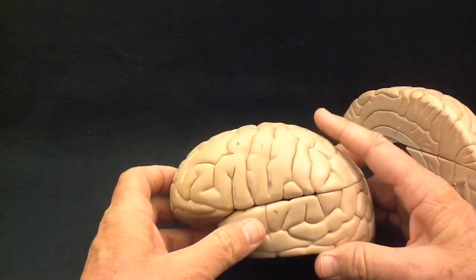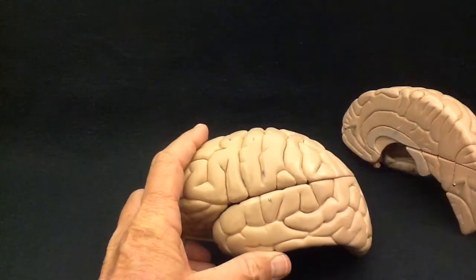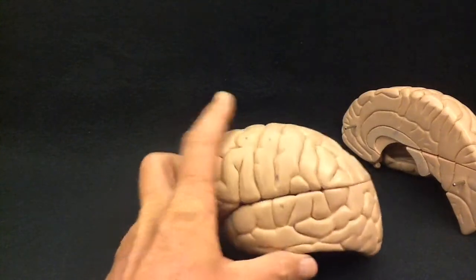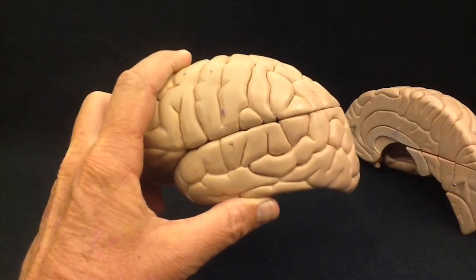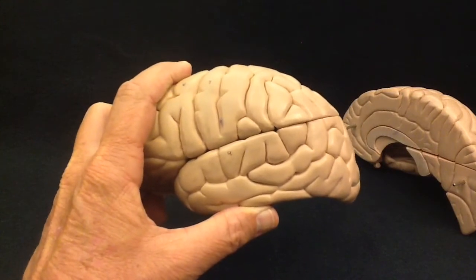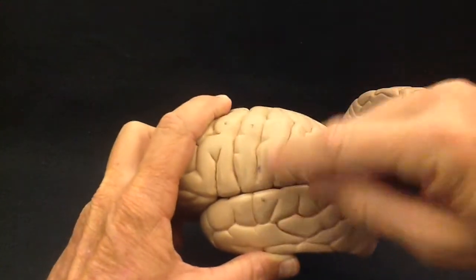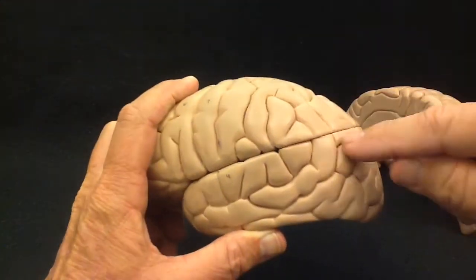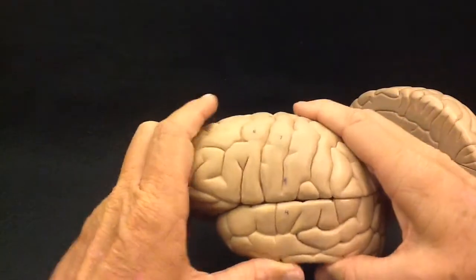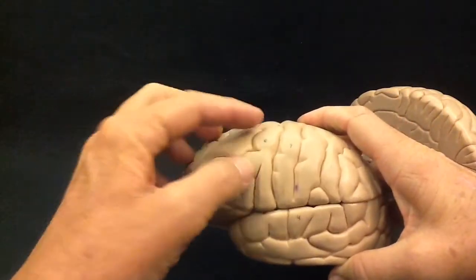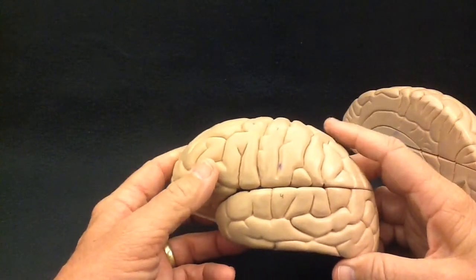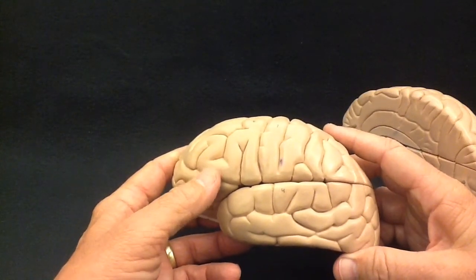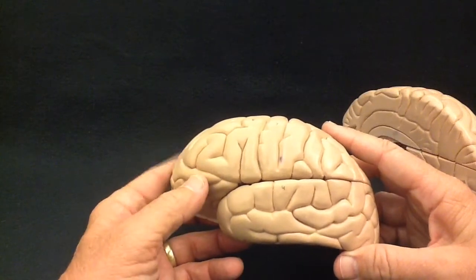A gyrus or a sulcus is like using the word street for a road that we drive on. Every street has a specific name, but they are all streets. Well, some of these gyrus and sulcus have specific names, but collectively they are just many sulci or many gyri. Gyri and sulci, plural. Gyrus and sulcus, singular.